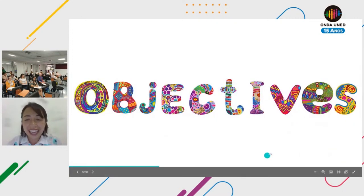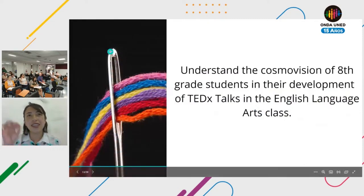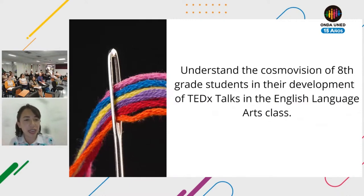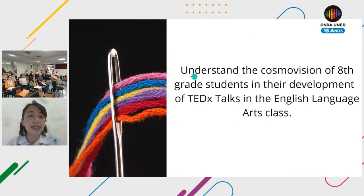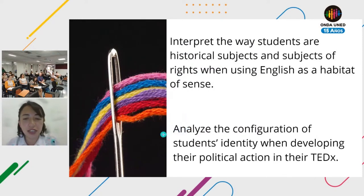The objectives are represented by the needle, because the needle is the one that sews everything together and puts all the pieces in place. The first objective is to understand the cosmovision of eighth grade students. The second — the main one — is to interpret the way students are historical subjects and subjects of rights. The third is to analyze the configuration of students' identity when developing their political action in their TEDx.